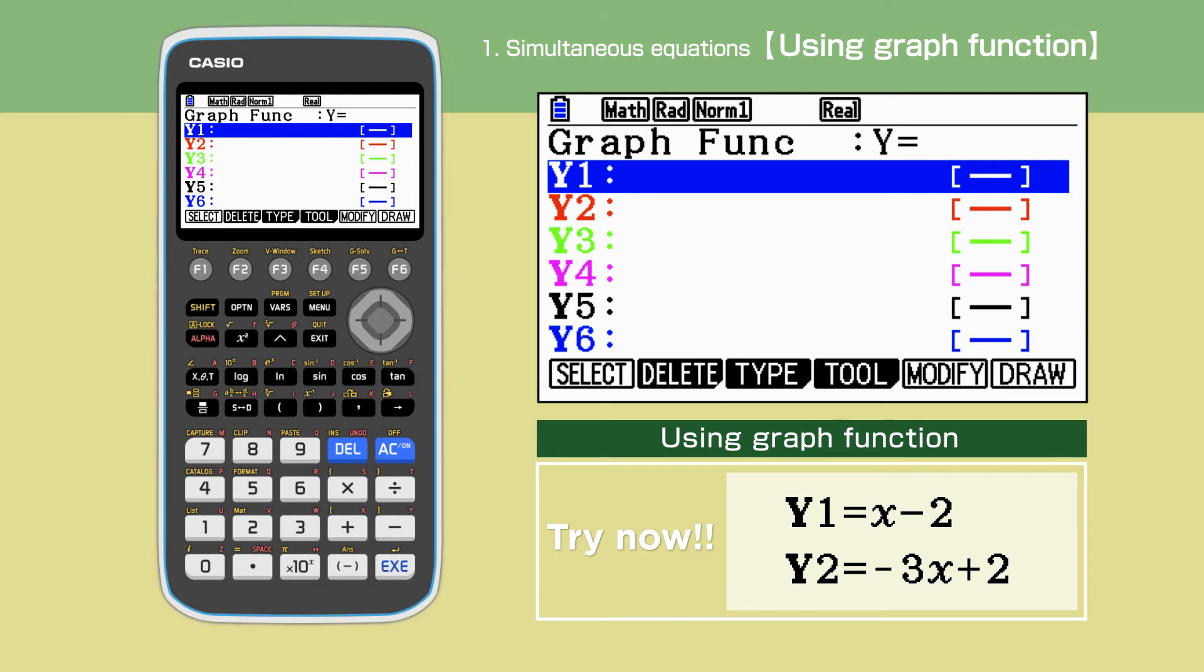In the equation function, our equations have to be in the form AX plus BY equals C. However, with the graphical solutions, the gradient intercept form will be used. Rearranging our equations to gradient intercept form will give Y equals X minus 2 and Y equals minus 3X plus 2.